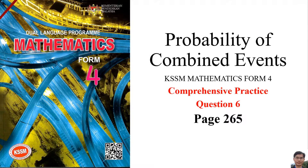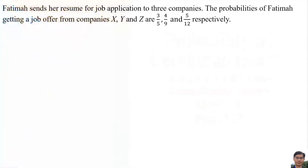Probability of Combined Events — Kits Assignment Method 4, Comprehensive Practice, Question 6, Page 265. Ultima sends a resume for job applications to three companies. The probability of Ultima getting a job offer from companies X, Y, and Z are 3 over 5, 4 over 9, and 5 over 12 respectively.